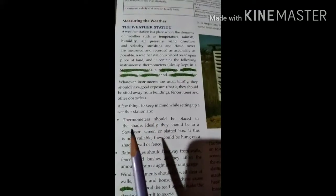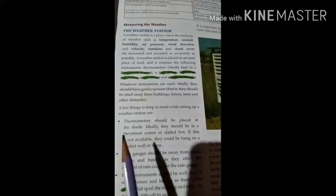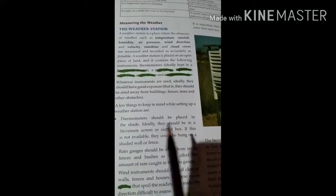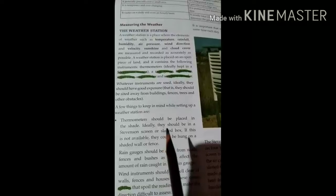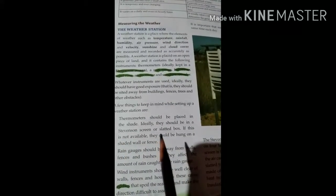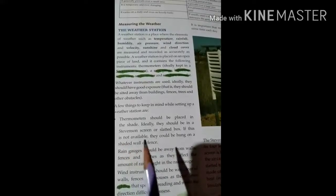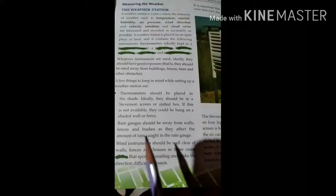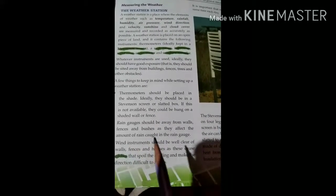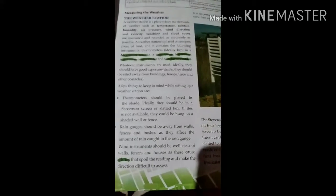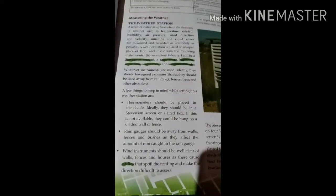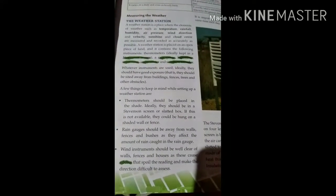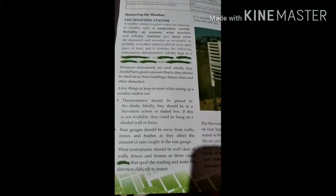A few things to keep in mind while setting up our weather stations are: thermometers should be placed in a shade. Ideally they should be placed in a Stevenson screen or slotted box. If this is not available, they could be hung on a shaded wall or fence. Rain gauges should be away from walls, fences and bushes as they affect the amount of rain caught in the rain gauge. Rain gauges should be kept in an open place so that they may readily measure the rainfall.